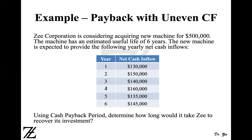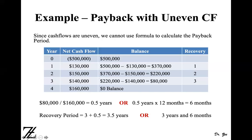What happens when you have uneven cash flows? In this example, Z Corporation is considering acquiring a machine for $500,000, with an estimated useful life of six years. The machine is expected to provide the following yearly net cash inflows — year 1: $130,000; year 2: $150,000 — and so on. All cash inflows are uneven, so you need to calculate how long it would take to recover this investment manually.